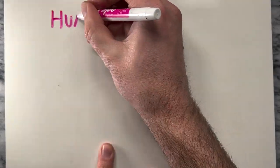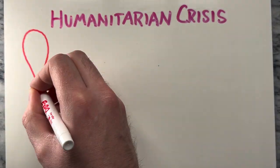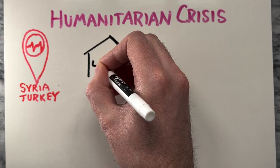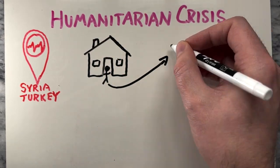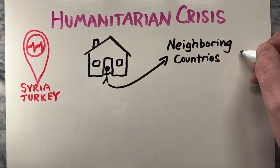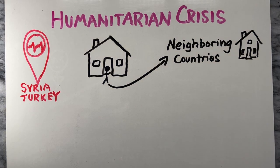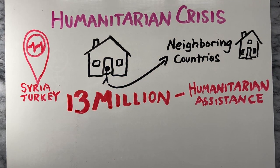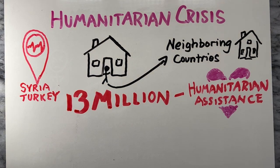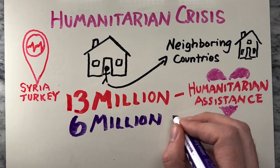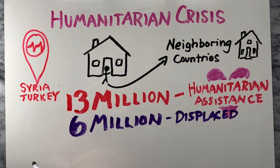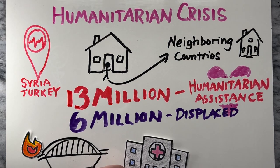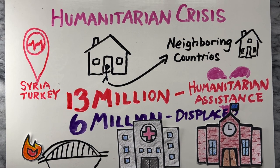On top of the recent earthquake that happened in the Syria-Turkey area in 2023, the Syrian Civil War has also led to a massive humanitarian crisis, with millions of people forced to flee their homes and seek refuge in neighboring countries and beyond. According to the United Nations, over 13 million Syrians require humanitarian assistance, and over 6 million are internally displaced. The war has also led to significant damage to infrastructure, including hospitals, schools, and other essential services.